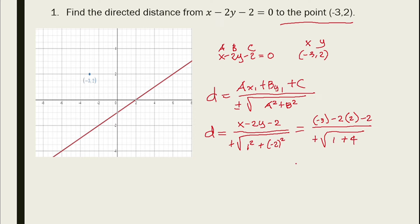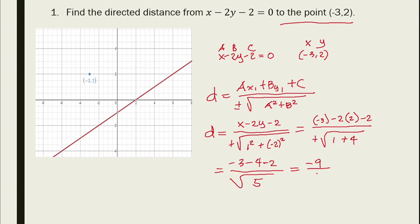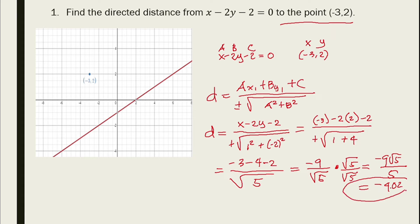The result is (-3 - 4 - 2) / √5 = -9/√5. Rationalizing: -9√5 / 5, which equals approximately -4.02. This is the answer for number one.